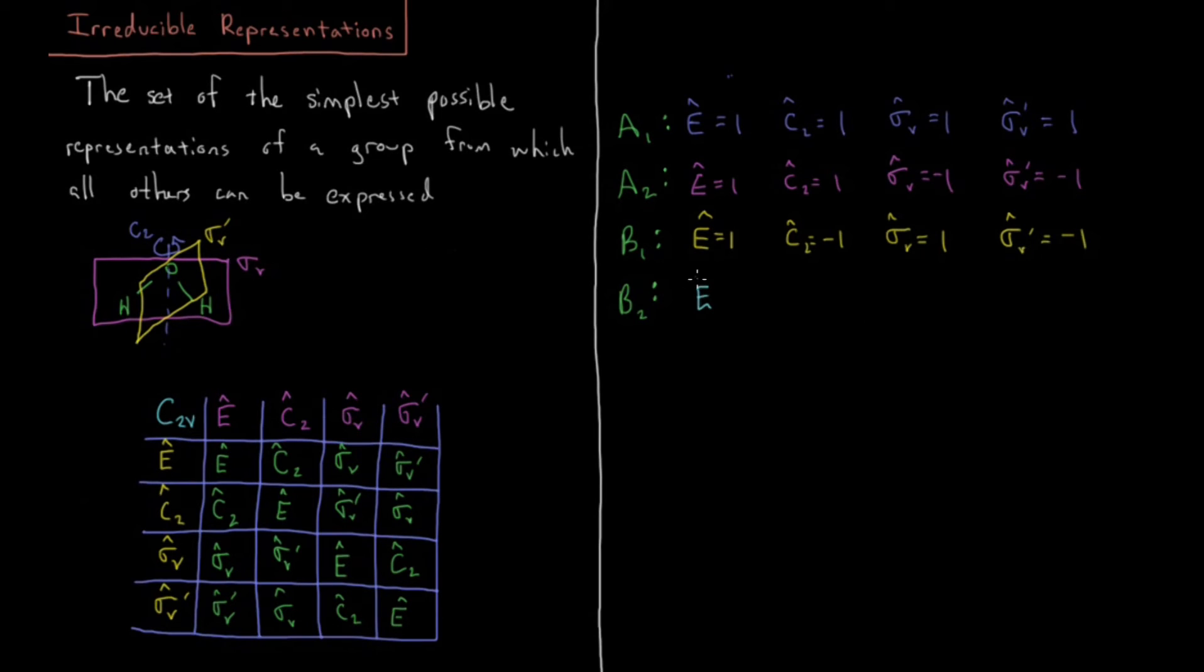And finally, you might guess, E is 1, C2 is minus 1, sigma V is minus 1, and sigma V prime equals 1. So that also, if you do your due diligence and check the 16 operations in that multiplication table, that indeed will be true for all 16 pairs of operations here.